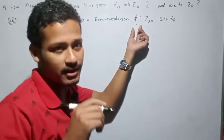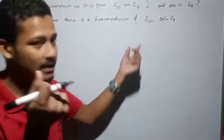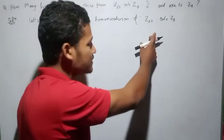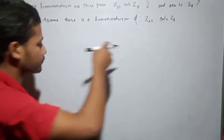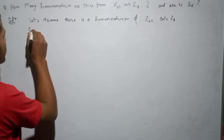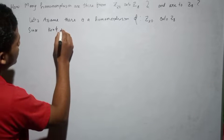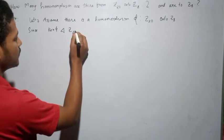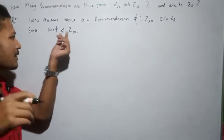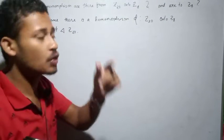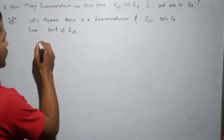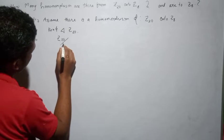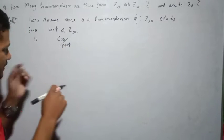In this homomorphism, you will get a kernel of φ. The kernel of φ is a normal subgroup — kernel of φ is a normal subgroup of the group Z20. Now, since this is a normal subgroup, we can define the factor group Z20 by kernel of φ.